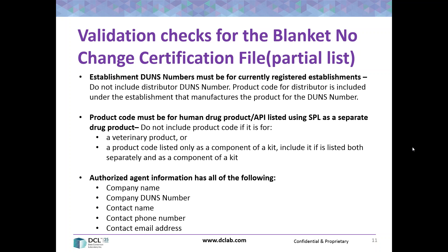Whether or not they'll be able to enforce it for domestic manufacturers, we'll find out. But that is the FDA's position: that everybody in the drug chain — from the API manufacturer to the bulk manufacturer, to the packager, to the labeler, repackager — they're all supposed to be listing their drugs, but only the drugs they're responsible for: their labeler code and their distributors' labeler code. And only the distributors if they make the final product.